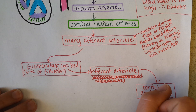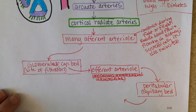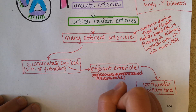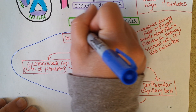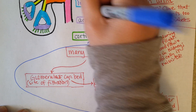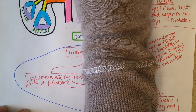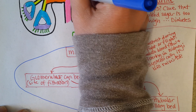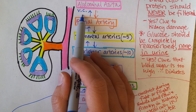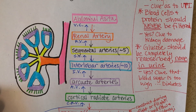Then there's a return — shown in blue — to cortical radiate venules. It goes right back the other way. So there's a cortical radiate vein, an arcuate vein, an interlobar vein, segmental veins, renal veins, and then the vena cava.